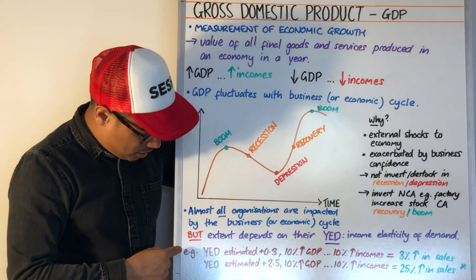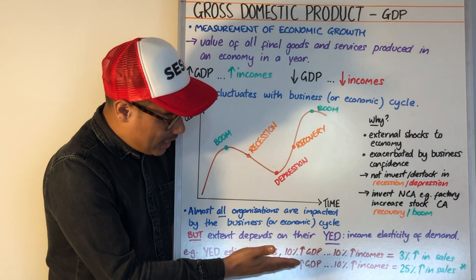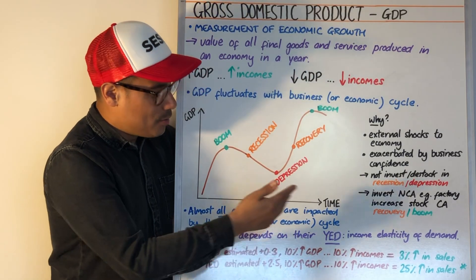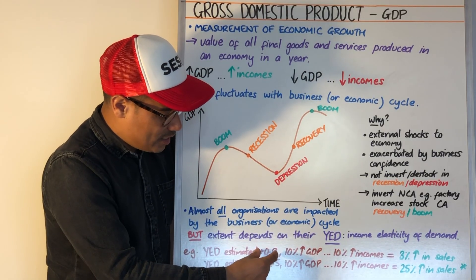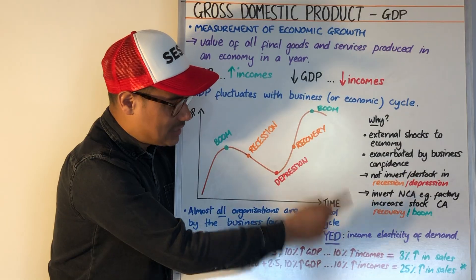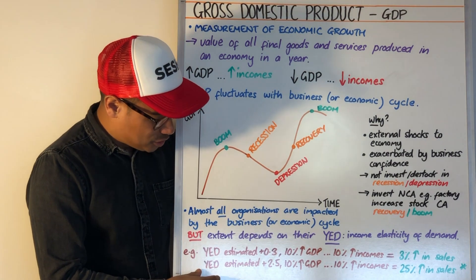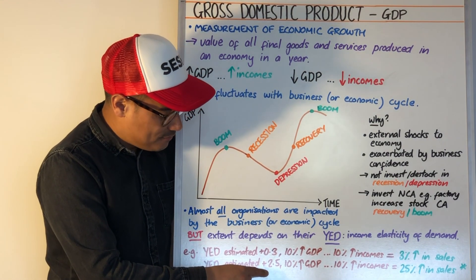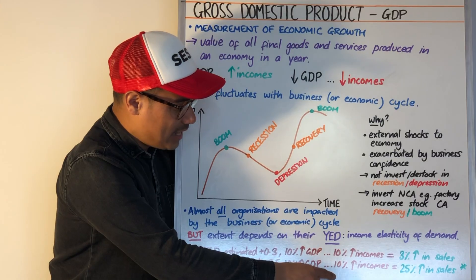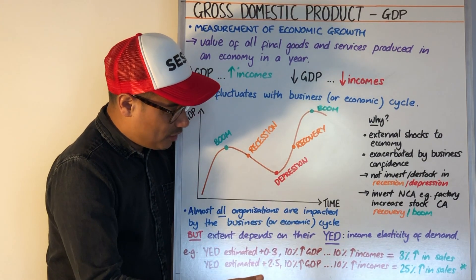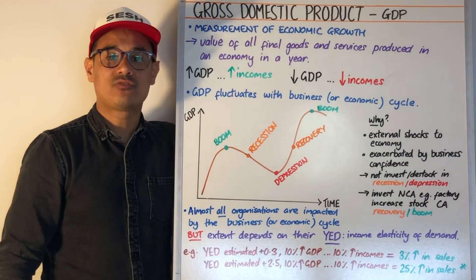Let's go through some small examples. If your YED is estimated to be +0.3 and there is a 10% increase in GDP, which may lead to a 10% increase in incomes, then 0.3 × 10 = 3%, so you'd estimate a 3% increase in sales. But if your YED is estimated to be much larger, say +2.5, and you get the same 10% increase in GDP and therefore the same 10% increase in incomes, then 10 × 2.5 = 25%, so you're now estimating a 25% increase in sales.